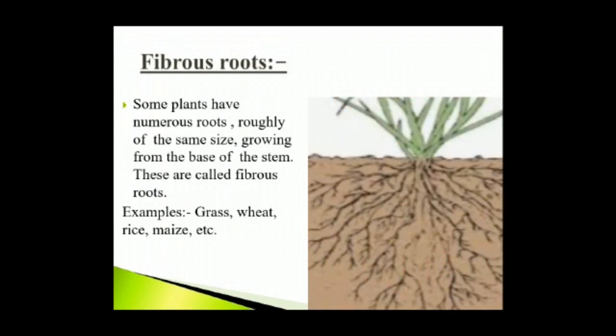Fibrous root: Some plants have numerous roots roughly of the same size growing from the base of the stem. These are called fibrous roots. They are a cluster of roots coming out of the stem. Fibrous roots do not go deep into the soil; they bind the soil tightly. Examples: grass, wheat, rice, maize, etc.